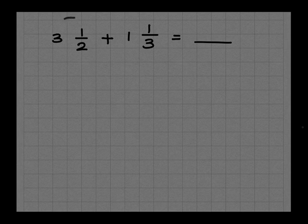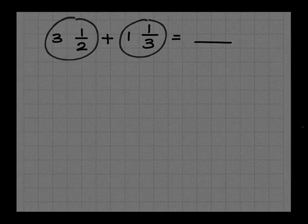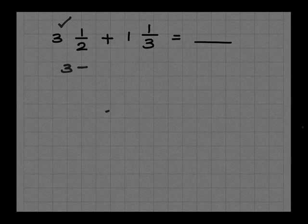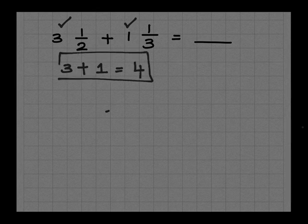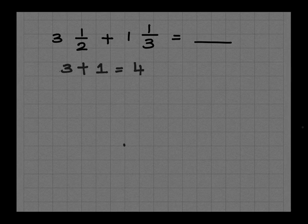To add the two mixed numbers, let us first add the whole numbers. Let me first add the whole numbers, 3 and 1. I get 4. So 3 plus 1 is 4. Now let me write the whole number. 3 plus 1 is 4, so 4 plus...